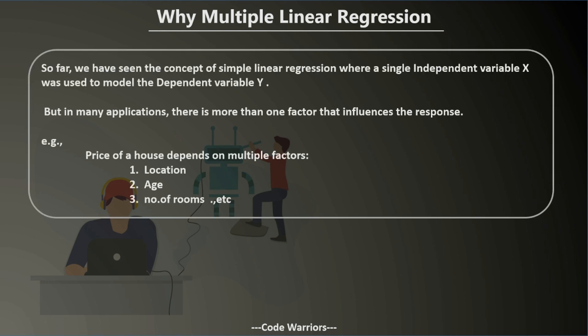To understand this, we need to remember the concept of simple linear regression, which fits a single independent variable with a single dependent variable. But in real-case scenarios, you won't see any problem where a dependent variable depends on only a single independent variable. For example, the price of a house doesn't only depend on the age of the house, but also its location, number of rooms, bedrooms, and more. In literally every case, you have more than one factor influencing the output, so we need a model that fits data with multiple independent variables.